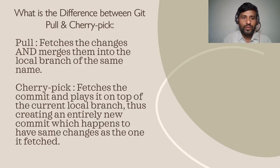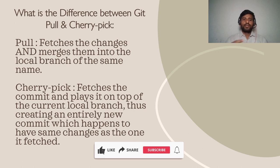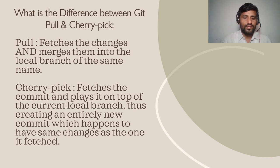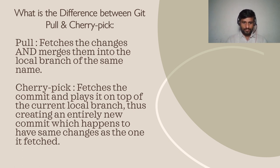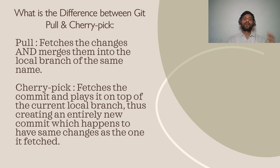What is the difference between git pull and git cherry pick? Git pull can fetch all changes, while git cherry pick fetches only specific commits. That is the difference. Git cherry pick fetches a commit and places it on top of the current local branch, creating an entirely new commit which happens to have the same changes as the one it fetched. Git pull fetches the changes and merges them into the local branch of the same name.